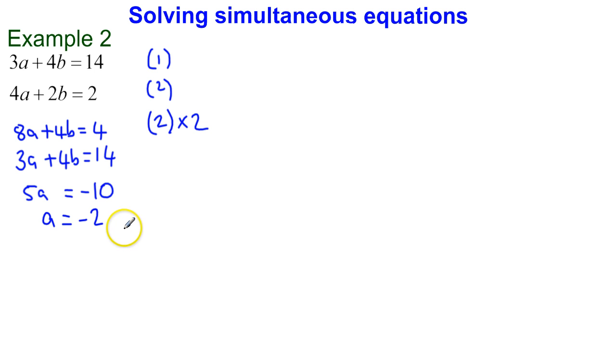Right, now I know what a is, I can use that information to work out what b is by substituting it back into one of these equations. So I'm going to substitute it into equation 2. So I've got 4a, which I now know is negative 2. So 4 times negative 2 plus 2 lots of b - b I don't know yet - equals 2.